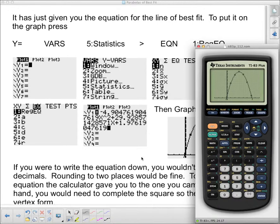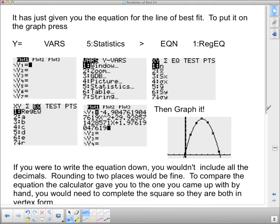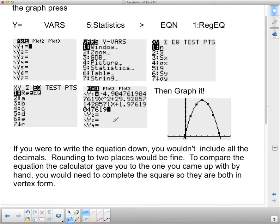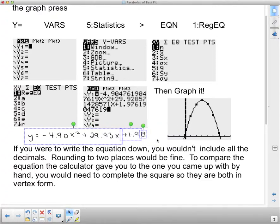And so if we were going to write that down, so here I have the whole thing. If we're going to write down this equation, say I asked you what the regression equation was, we wouldn't write down all of those numbers. Here's the x squared right there, and here's the x, and then the last thing is the constant term. So I'd just go to a couple of digits there. So I would say y equals negative 4.90x squared plus 29.93x plus 1.98. And that's all we really need for that. That's the equation. We don't put in all of them.